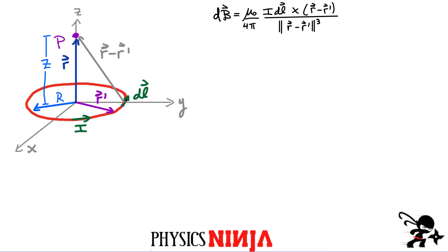This little element of current is kind of going into the page, or along this negative x direction, just from this diagram. We have vectors that are going to go from the origin all the way to the edge — that's my r prime vector. I also have a vector that goes to the point of observation, and that's going to be a distance z away from the plane. The radius of this loop is r. It's important to have a clear diagram here because we want to really simplify this. Let's look at the direction of this little field produced by this small element.